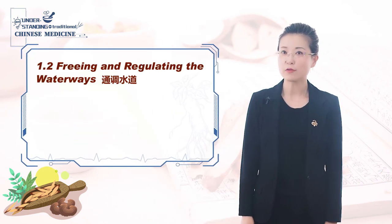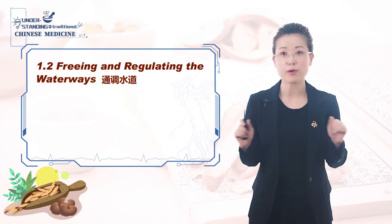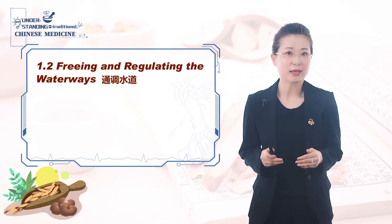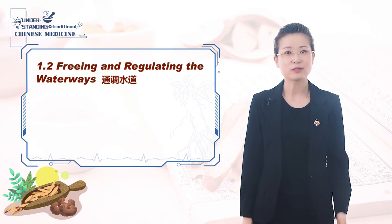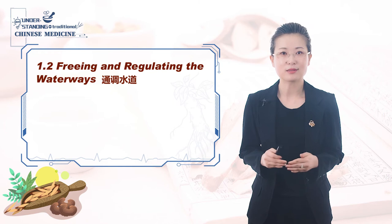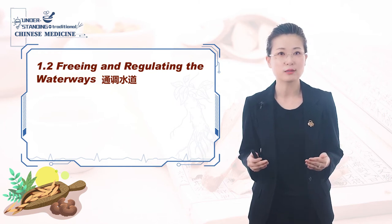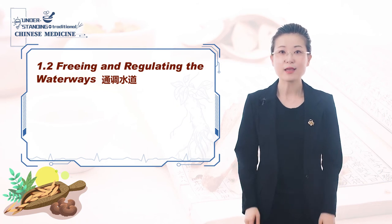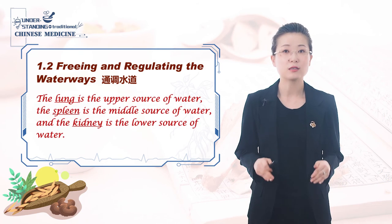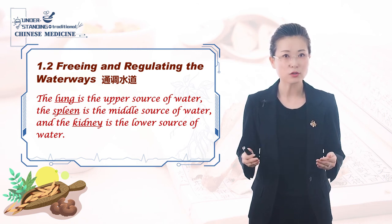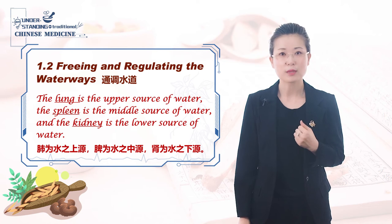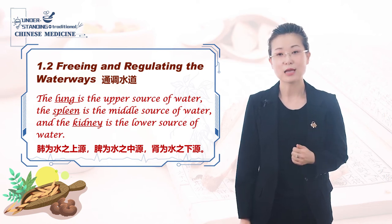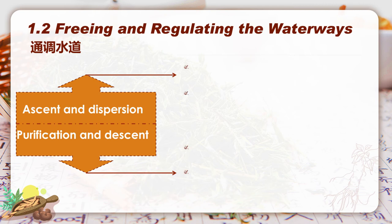The second function of lung is that lung can free and regulate the waterways. Lung plays a very important role in water metabolism. Together with spleen and kidney, these three zang organs are regarded as the most important organs in water metabolism. That is why we have the understanding that the lung is the upper source of water, the spleen is the middle source of water, and the kidney is the lower source of water.